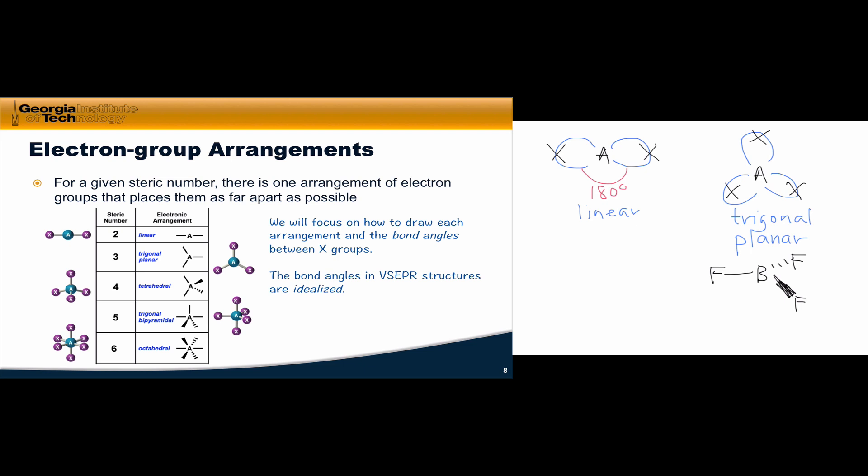One last comment on electron group arrangements: we use this term very specifically to denote the arrangement of electron groups around an atom. The reason why we use this specific term will become apparent in a future video. It has to do with the distinction between bonding and non-bonding electrons, and whether we account for non-bonding lone pairs affects how we think about the arrangement of electrons and the geometry of the molecule. So 'electron group arrangements' refers to the arrangement of all electron groups — bonding and non-bonding — around a central atom.